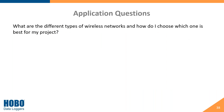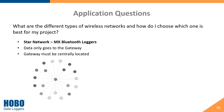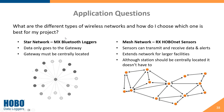What are the different types of wireless networks and how do I choose? Our MX Bluetooth data loggers with gateway use a star network — ideally with the gateway at the center and all loggers connecting directly to it. They can't pass signals through other sensors. Our HOBOnet wireless sensors, on the other hand, form a self-healing mesh network. While it's ideal to centrally locate the RX station, sensors can pass their signal through up to five other sensors in line to reach the station, making the mesh network more flexible for large or complex facilities.